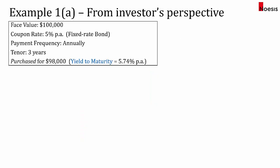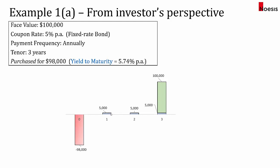Let's look at Example 1A from the investor's perspective. This bond has a face value of $100,000 with a coupon rate of 5% per annum for a fixed rate bond. The payment frequency is annually and the tenor is 3 years, meaning the bond will mature in 3 years paying 5% per annum based on the face value. The investor purchased the bond for $98,000, realizing a yield to maturity of 5.74% per annum. The coupon is 5% multiplied by $100,000, giving $5,000 per year.